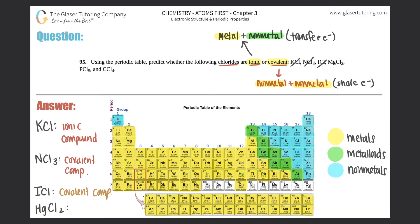MgCl2: magnesium and chlorine are coming together to form a compound. Chlorine is a nonmetal, but magnesium is all the way over here on the periodic table — that's a metal. A metal always forms an ionic bond, so MgCl2 is an ionic compound.